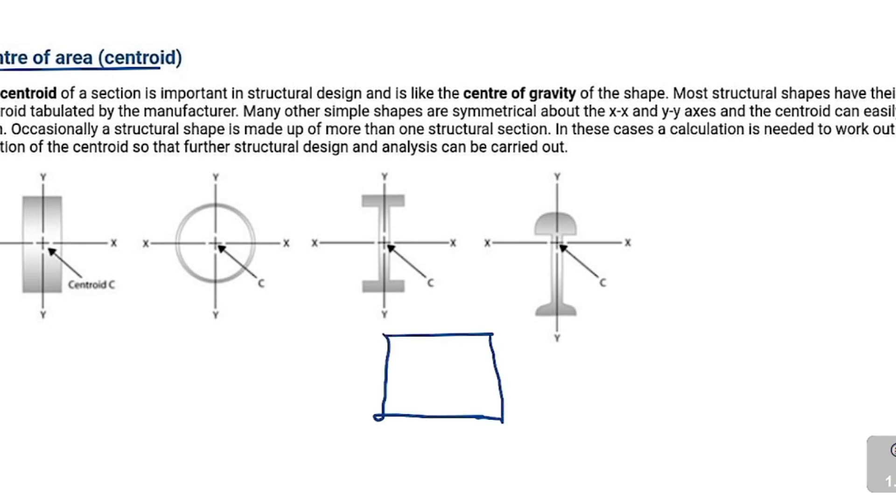Many other simple shapes are symmetrical. So if something is symmetrical, let's just take a square for example - it's very easy to find out what the centroid of this shape is. You just draw two diagonal lines like this, and where these two diagonal lines meet, that is what would be your centroid. Many other shapes are symmetrical about the y-axis and the x-axis.